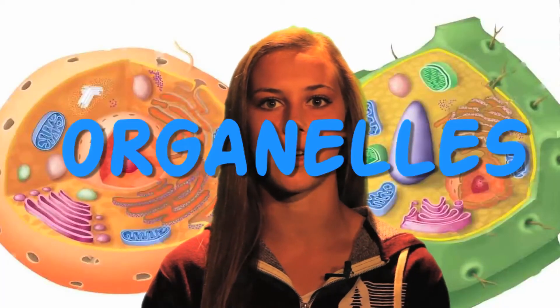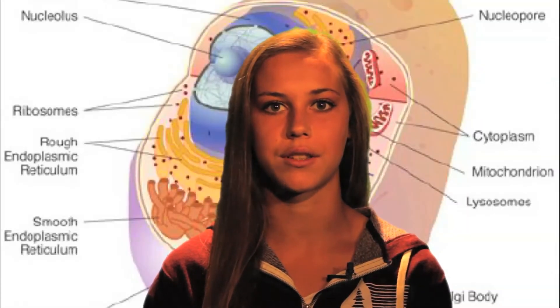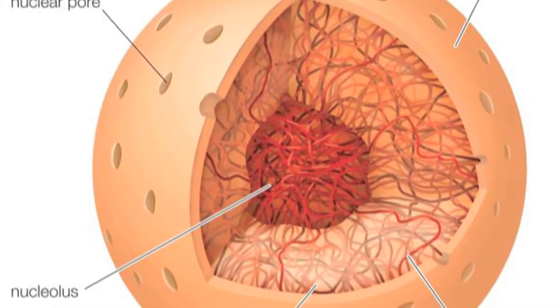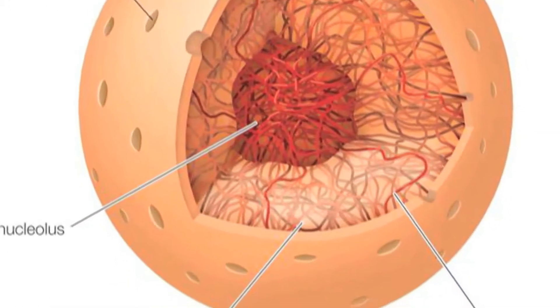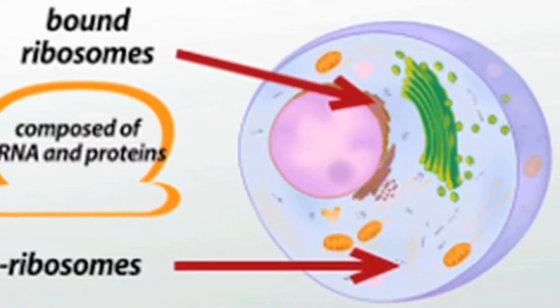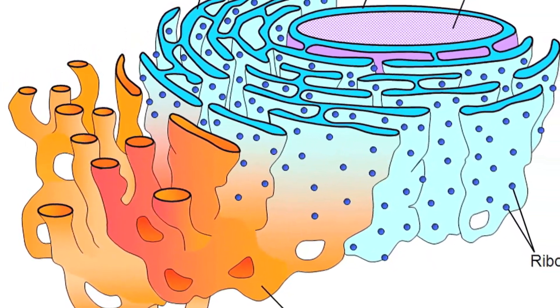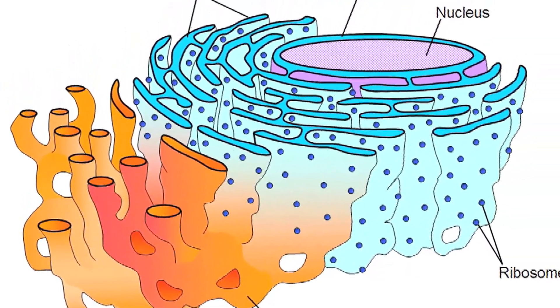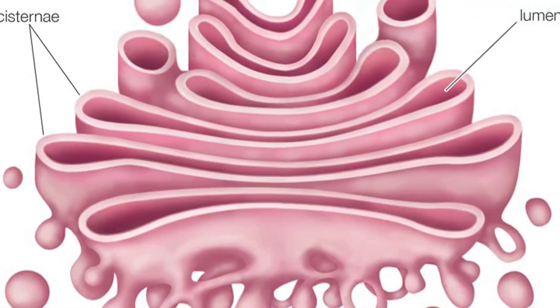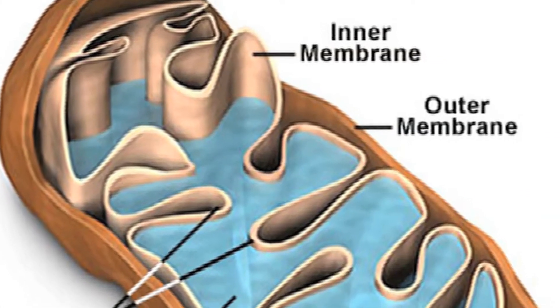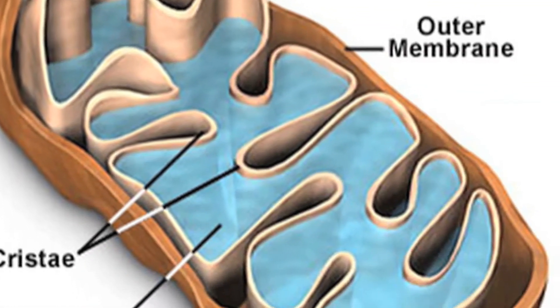The internal structures of cells are known as organelles and are responsible for carrying out specific cellular functions. Some of these organelles include the nucleus, responsible for storage and transmission of DNA; ribosomes, protein manufacturers; endoplasmic reticulum, a biosynthetic factory responsible for protein development; Golgi apparatus, sorter and distributor of proteins; and mitochondria, the ATP powerhouse of the cell.